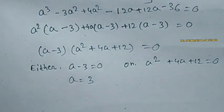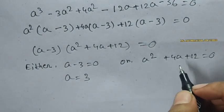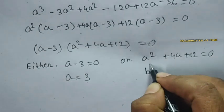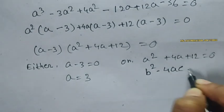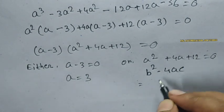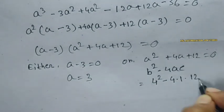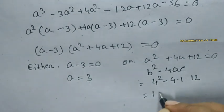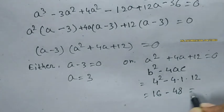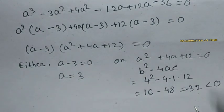Here I will use the quadratic formula to know whether I will get any real value of a. So b square minus 4ac equal to here b means 4 so 4 square minus 4 a means 1 and c means 12. So 4 square means 16 and 4 times 12 is 48 equal to minus 32. Minus 32 less than 0.